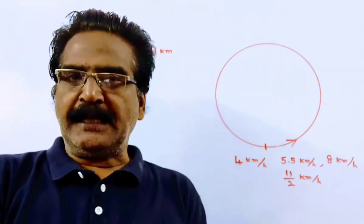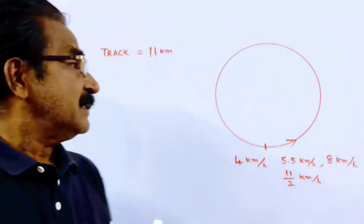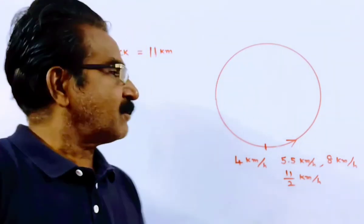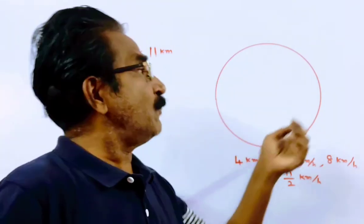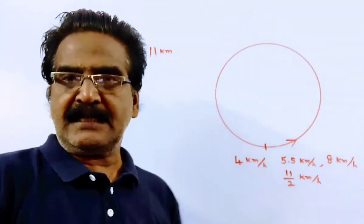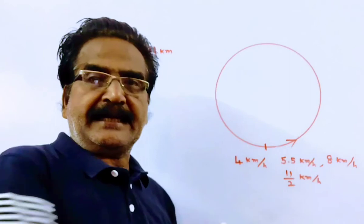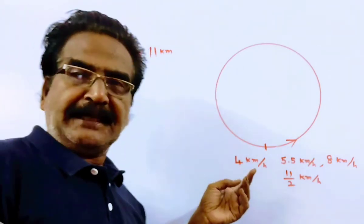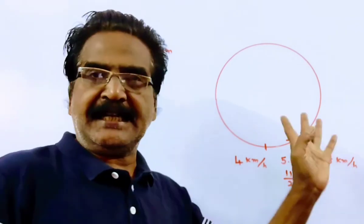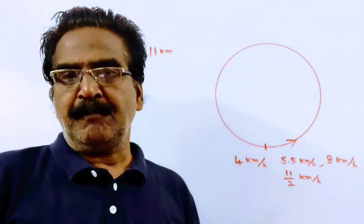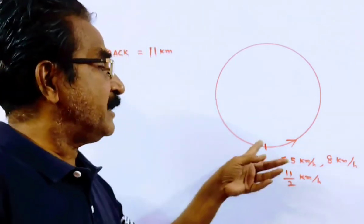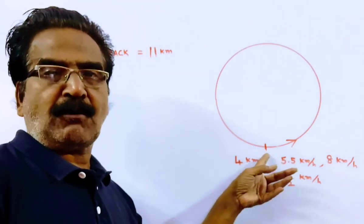Hi friends, good morning. Please look at the next problem. See friends, three friends start running around a circular track of length 11 km in the same direction with speeds of 4 kmh, 5.5 kmh and 8 kmh. When will they meet for the first time at the starting point? This is the starting point.